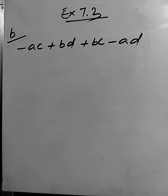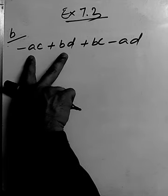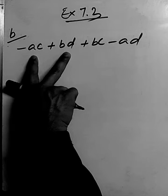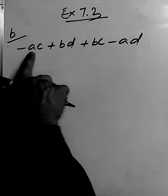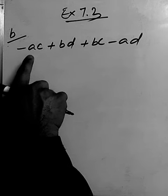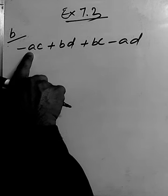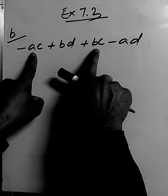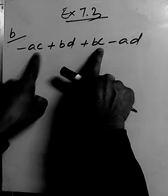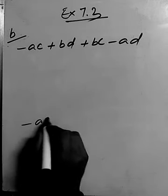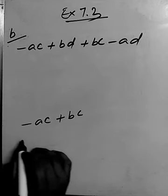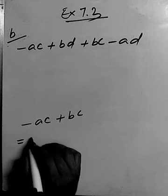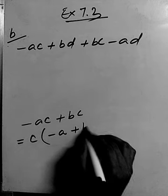From the first two terms there is no common factor, so we try a different grouping. Let's make a group consisting of the first term and the third term: minus AC plus BC. From these two terms we find C is common, so C times (minus A plus B).